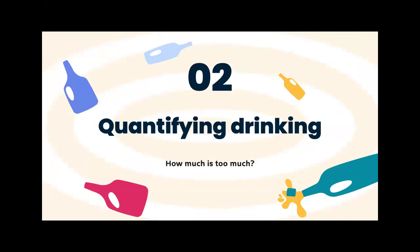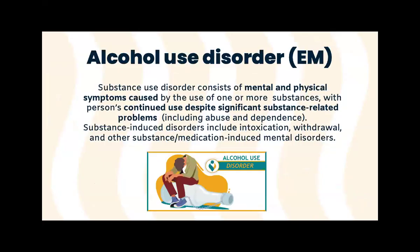Let's start looking at quantifying drinking, because that becomes important when you're assessing somebody with an alcohol use disorder and deciding how much is too much. This is from the EML. The definition of alcohol use disorder — we actually speak about substance use disorder and specify that it was alcohol — is basically very simple: anybody who's got any mental or physical symptoms caused by alcohol and they still continue to drink. That's the only definition. It's not about how much you drink or what you drink or whether you're dependent or not. If you're drinking despite alcohol making trouble in your life, then you have a problem.